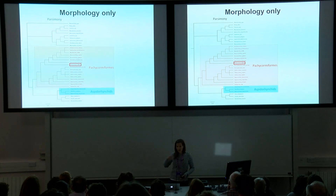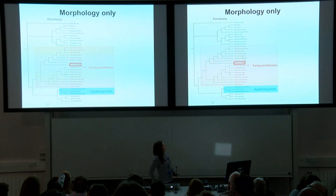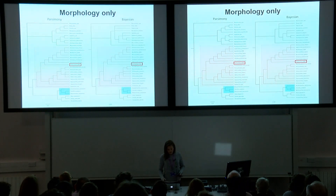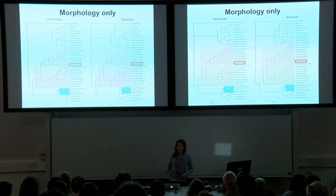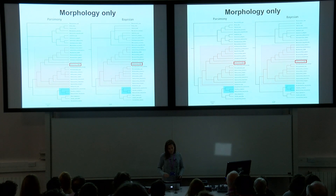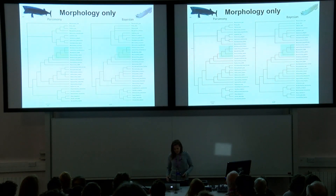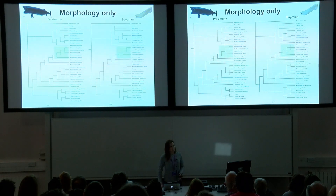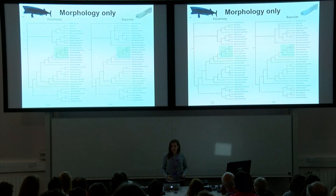In the parsimony analysis, Pachycomus — shown in the red box — has been resolved as an early diverging pachycomiform, as we already knew, and Aspidorhynchids have been placed as the sister taxa to pachycomiforms. The Bayesian analysis said roughly the same thing: Pachycomus came out as quite an early diverging pachycomiform and Aspidorhynchids are again the sister taxa, with slightly lower resolution mainly around the outgroups. Interestingly, the giant suspension feeders were grouped as a monophyletic clade, supporting all previous analyses, with the distinctive gill raker morphology being among the supporting characters — suggesting that gill raker morphology informs not only ecology but also phylogeny.